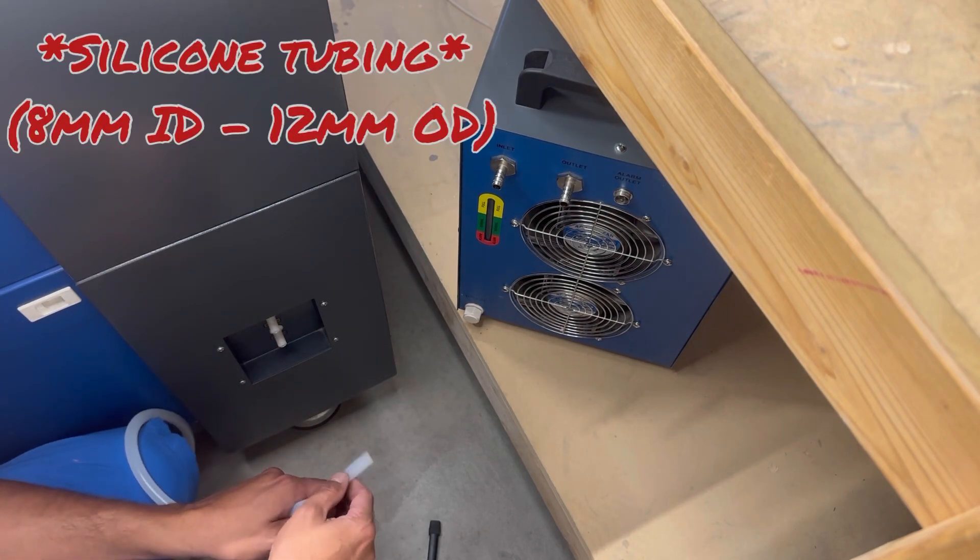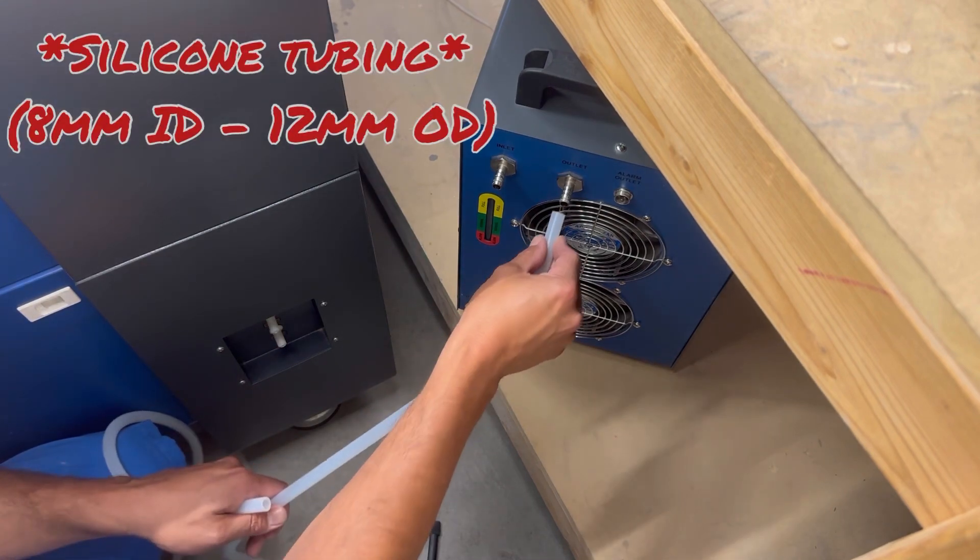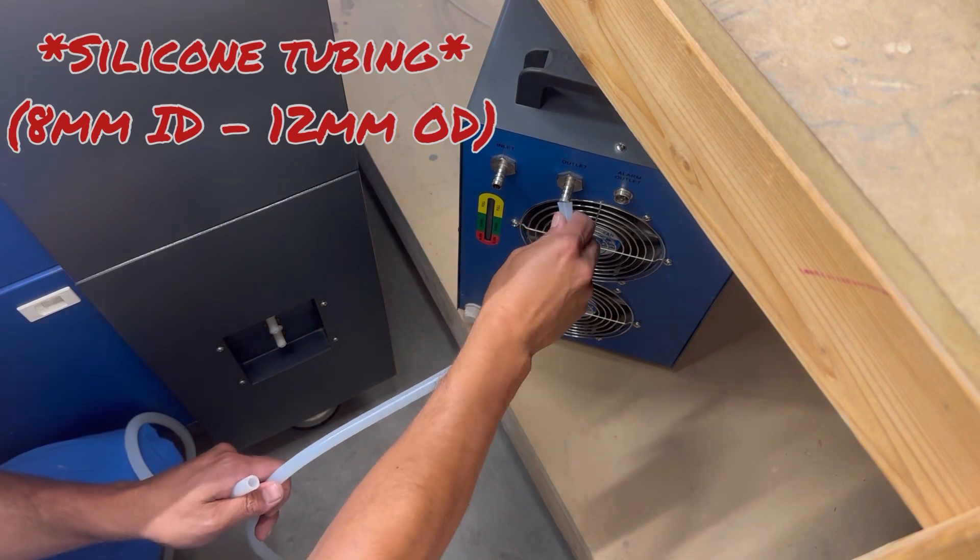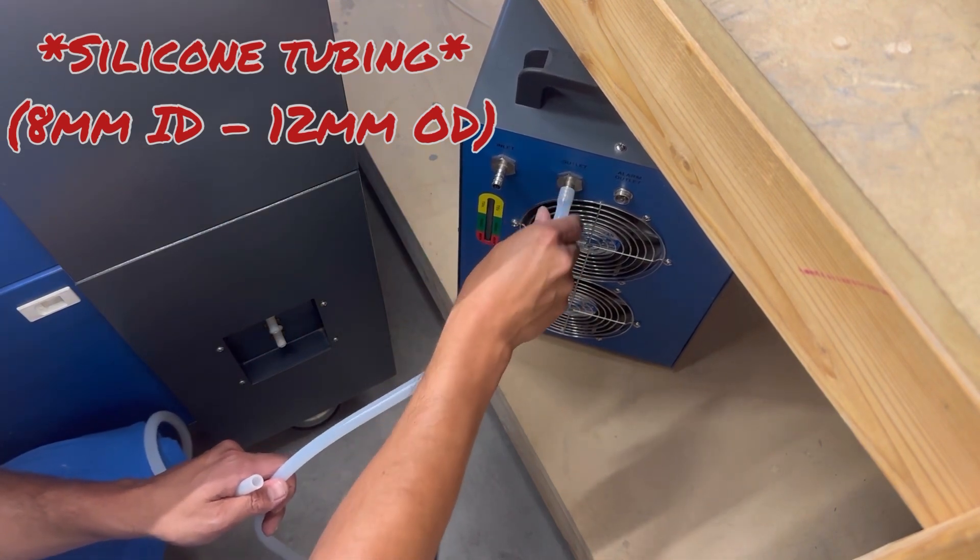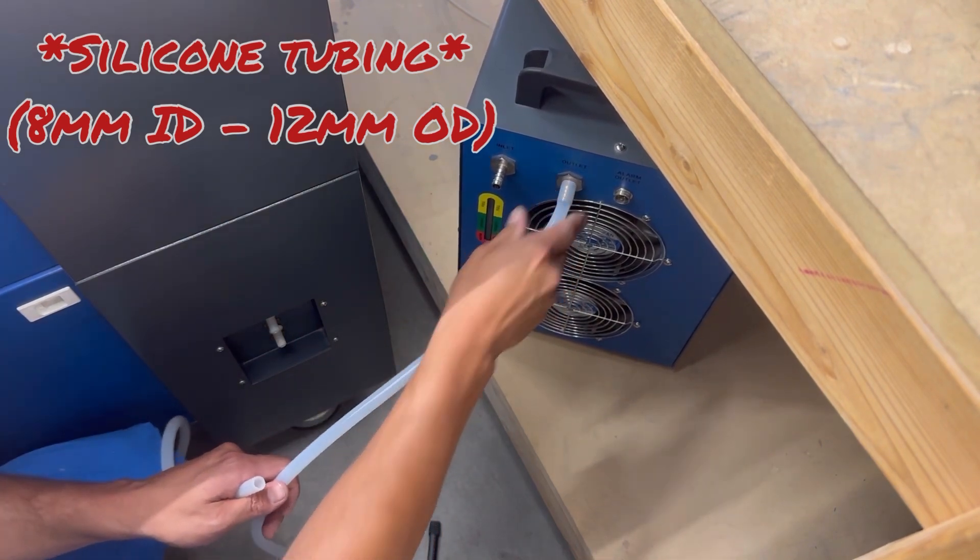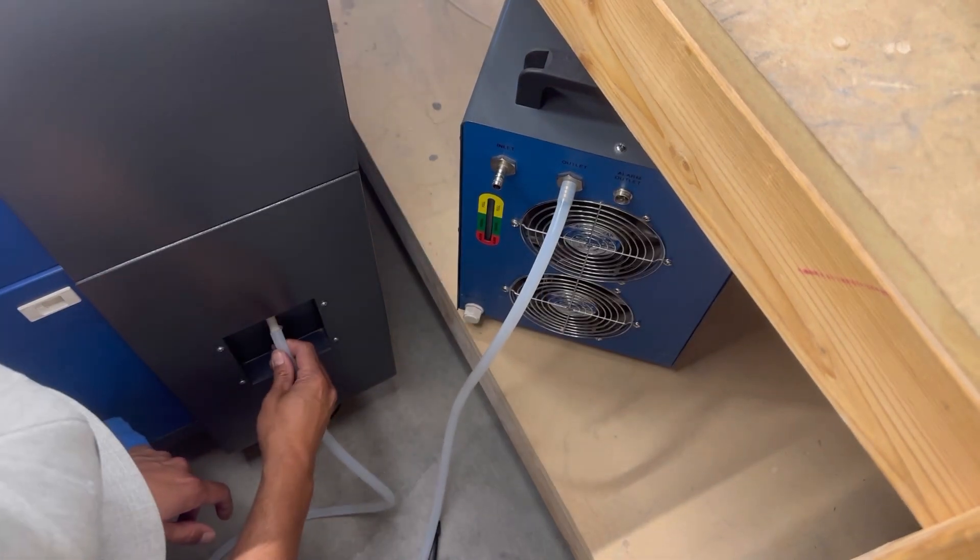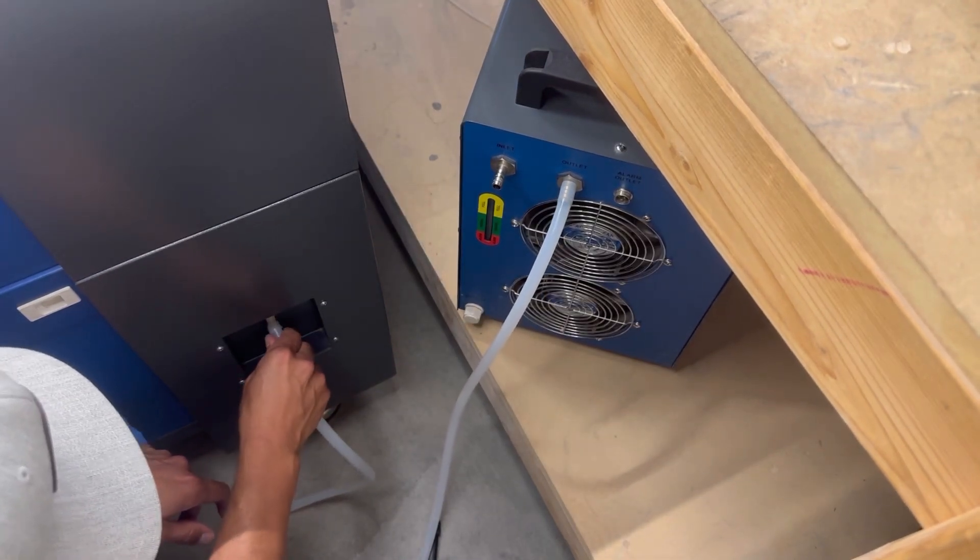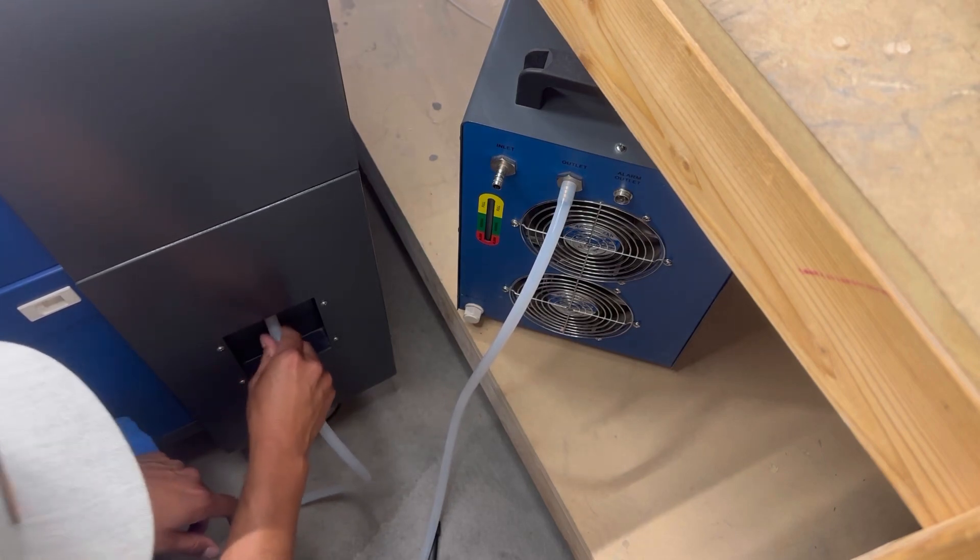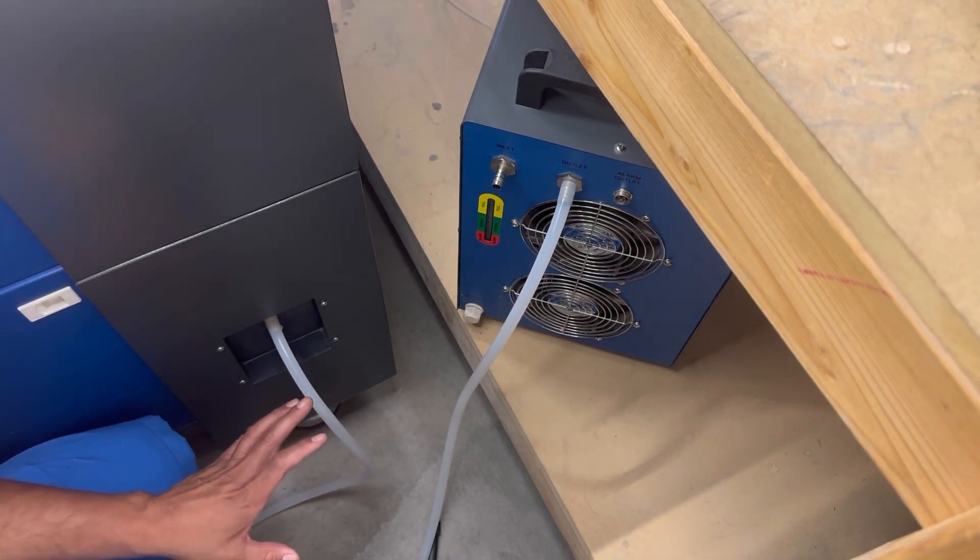So to connect this correctly, you're gonna go from outlet out of the chiller, outlet to the inlet, which is the top one of the laser. Okay? It's very important. You don't want to get the flow incorrect.